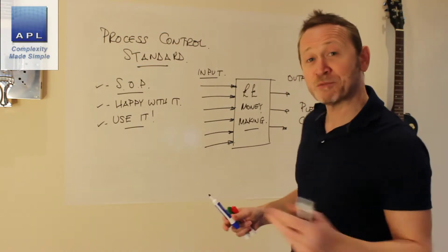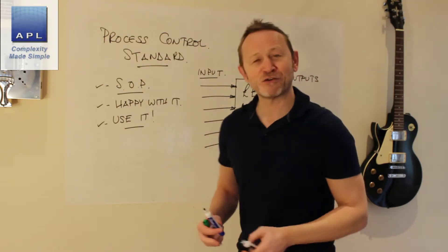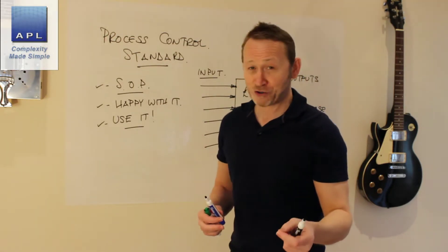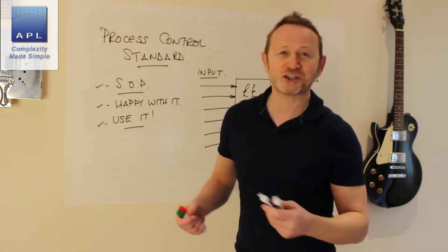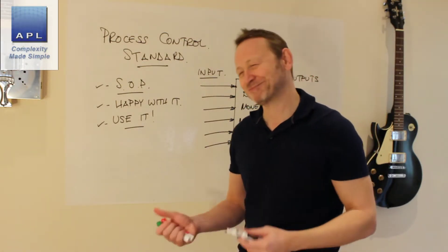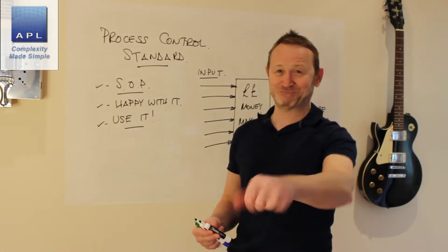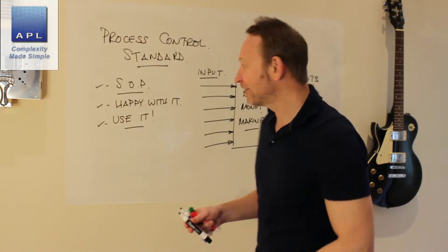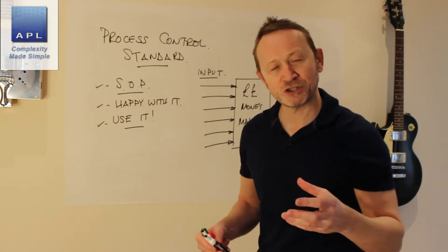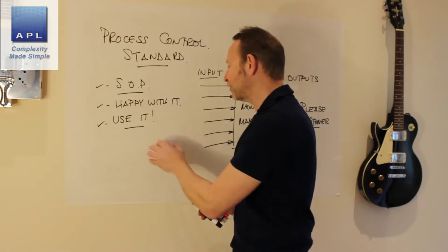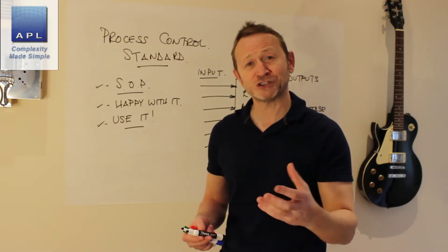Where it typically goes wrong is these two: people either write half-arsed standards or they don't use them. They like to write concessions and just say it'll be okay, or let the operator just find his own way. That's where control typically goes wrong — we don't write good enough standards or we don't use them. What I want to talk about today is how to write a great standard.